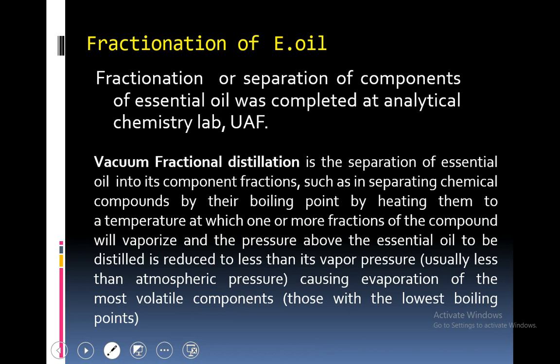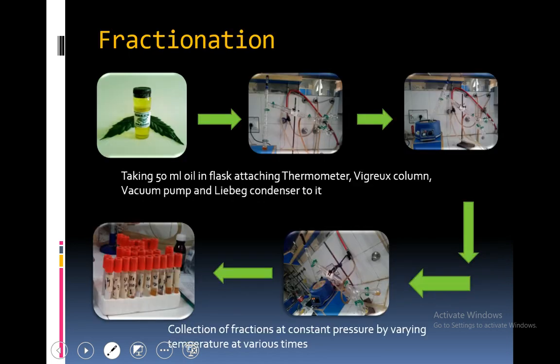Fractionation of essential oil was performed using vacuum fractional distillation — the separation of essential oil into its component fractions by their boiling point, by heating them to a temperature at which one or more fractions vaporize. The pressure of the essential oil to be distilled is reduced to less than its vapor pressure, causing evaporation of the most volatile compounds. We took 50 ml of oil in a flask attached with a thermometer. A Vigreux column, vacuum pump and Liebig condenser were attached, and various fractions were collected at constant pressure by varying temperatures at various times.